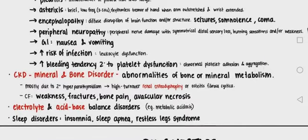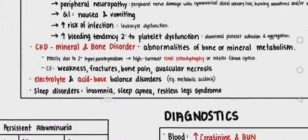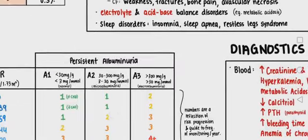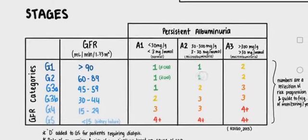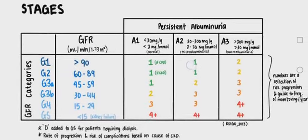CKD also includes mineral and bone disorder, including abnormalities of bone and mineral metabolism, renal osteodystrophy, weakness, fractures, bone pain, and avascular necrosis. There are also electrolyte and acid-base balance disorders. Sleep disorders include insomnia, sleep apnea, and restless leg syndrome.